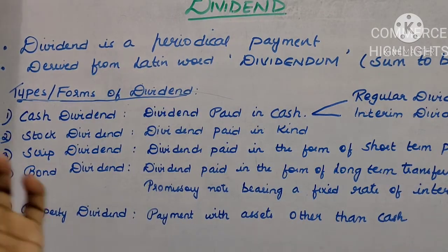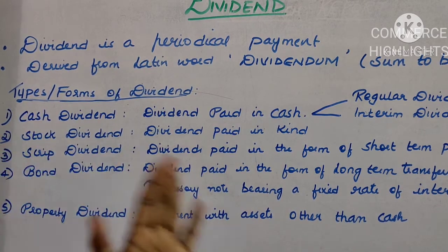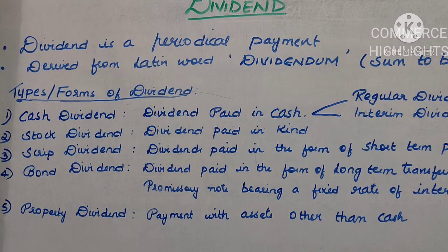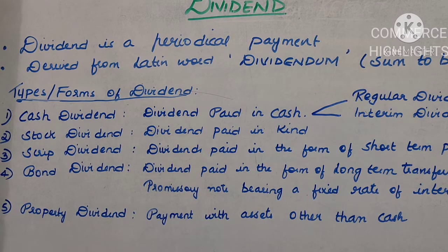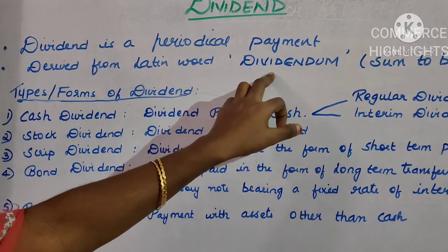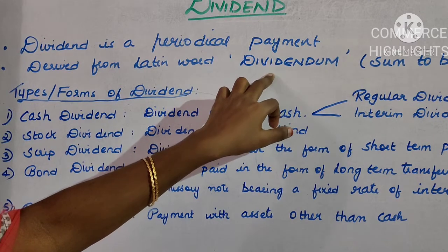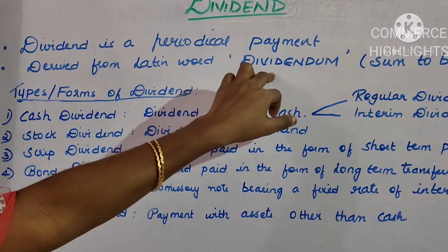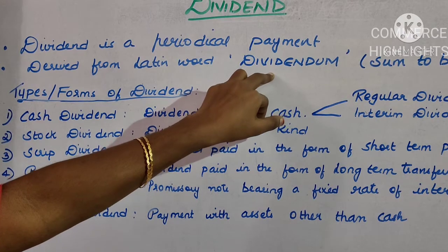One important point is that dividend is not a compulsory payment. When a company takes a deposit or a loan, interest on that is a compulsory payment — even if the company earns profit or not, it has to pay interest. Whereas dividend is paid only when the company earns profit; it distributes a share of profit as dividend.